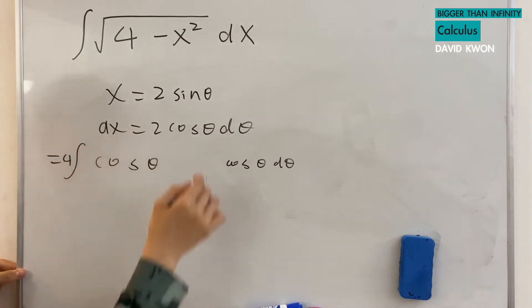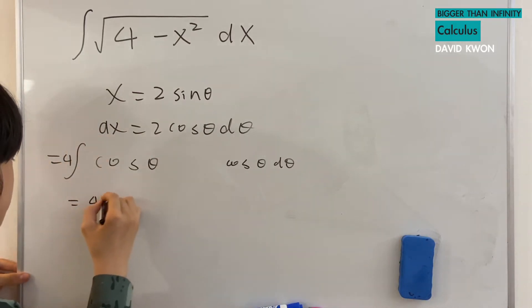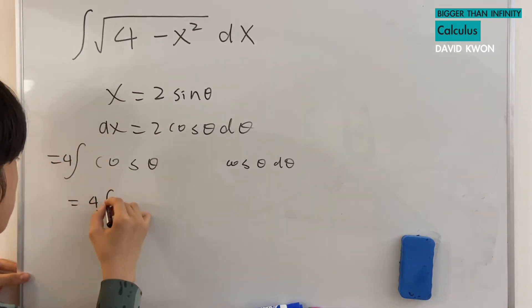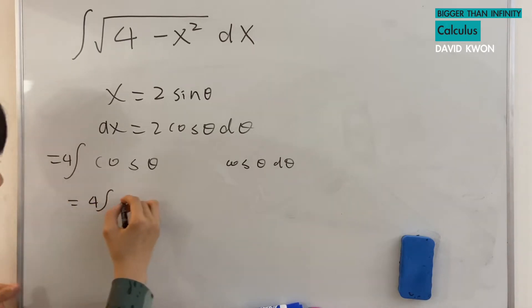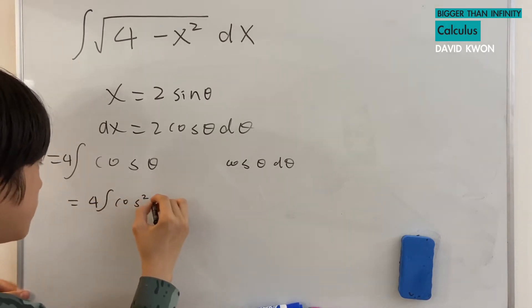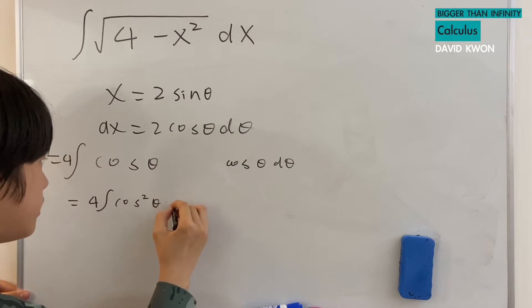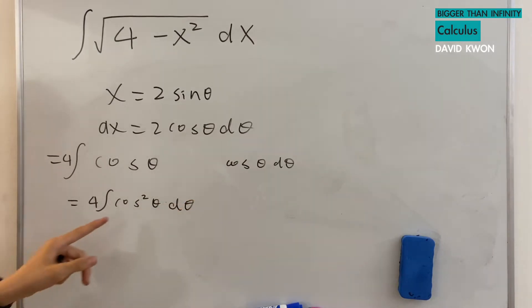And also from here, we would get 4 times the integral of cos squared theta times d theta.